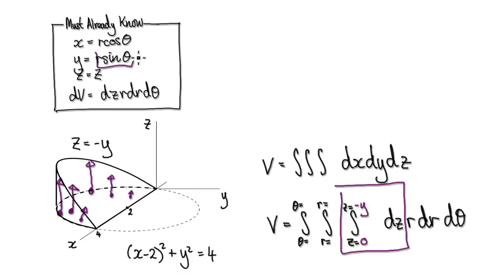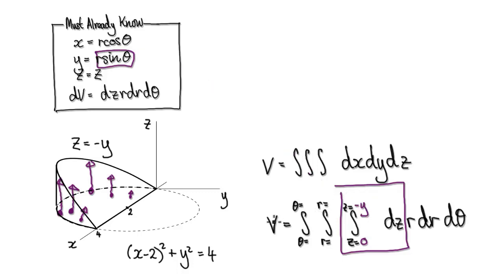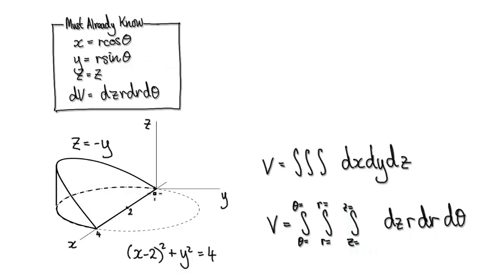You start at an elevation of zero and then you stop when you get to the plane. The plane is negative y. Later on we can convert y into cylindrical form. In terms of R, you start at a radius of zero and then you stop.